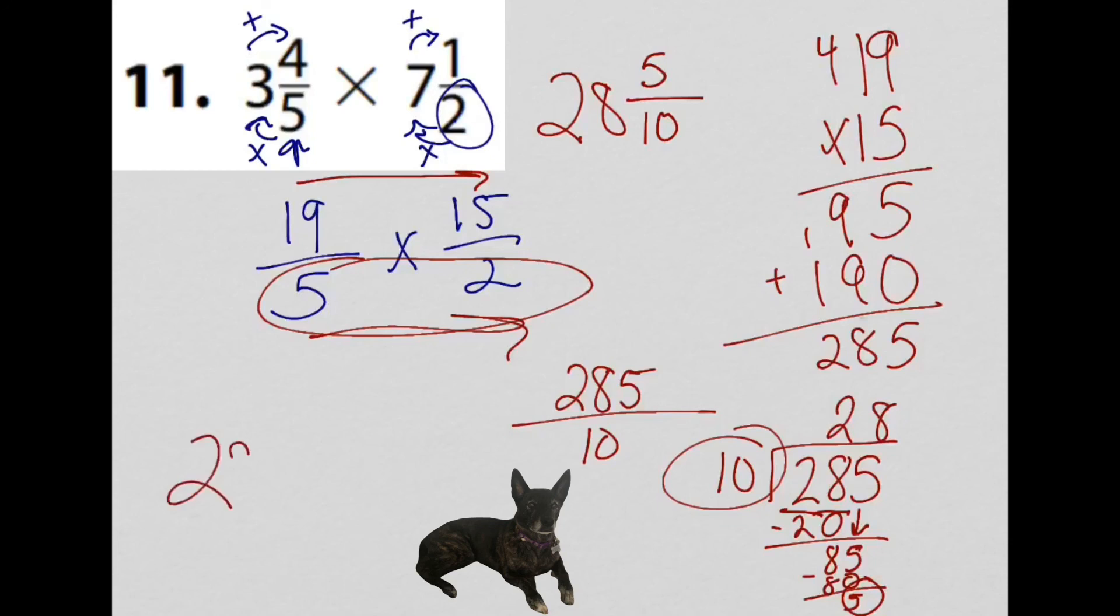I can. 28 is going to stay the same, but I have 5 tenths here that I can reduce. So if I have 5, I can divide by 5 on the top and 5 on the bottom that will not have a remainder with either number. So 5 divided by 5 is 1. 10 divided by 5 is 2. So my equivalent fraction that's in lower terms is going to be 1 half. So my final answer for this problem is 28 and 1 half.